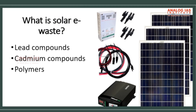First, let's understand what the harmful components of the solar panel are that actually cause harm — what constitutes solar e-waste and what are the concerns. The solar modules use very hazardous materials like lead compounds, cadmium compounds, and other polymers. If these compounds are not disposed of properly after they get used up, they can lead to leaching, and leaching of these hazardous materials can have very negative environmental and also human health impacts.